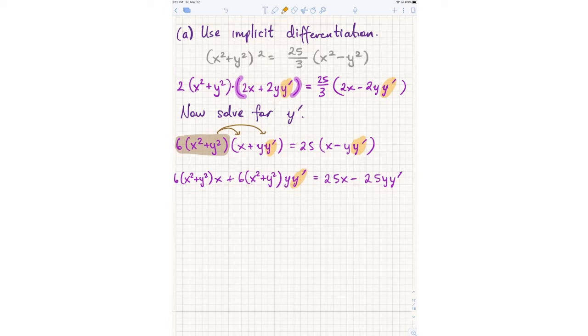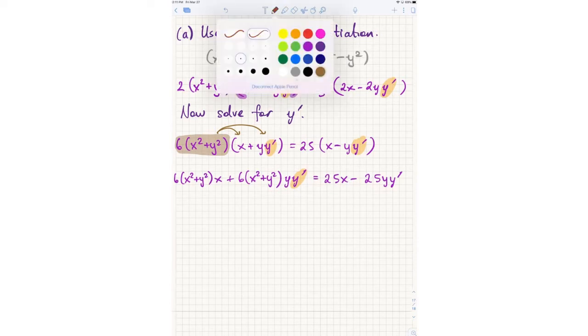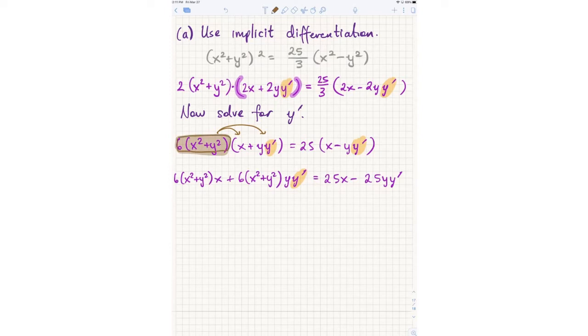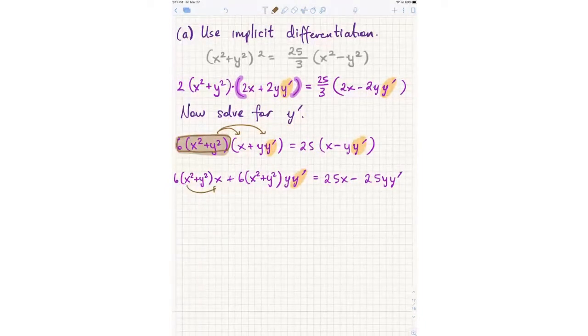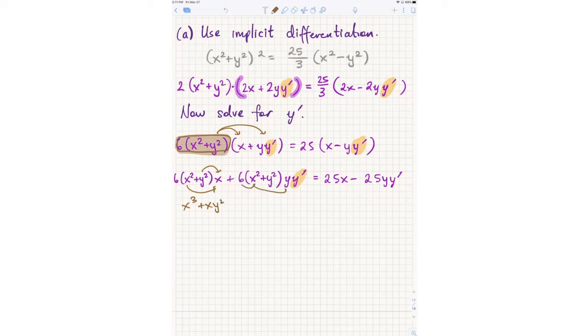Can you explain that again? I got a little lost. Okay, I'm treating this brown highlighted term, the 6(x²+y²), as just one term. So I'm distributing that to each of the x and yy'. How you would maybe normally be tempted to do this is to actually say, okay, now let me distribute the x² and the y² to get x³ + xy². Then distribute this and this, and then distribute this to get x²yy' + y²yy'.